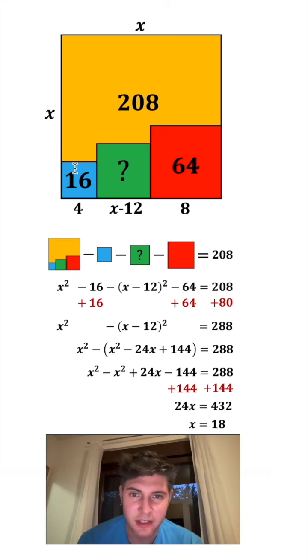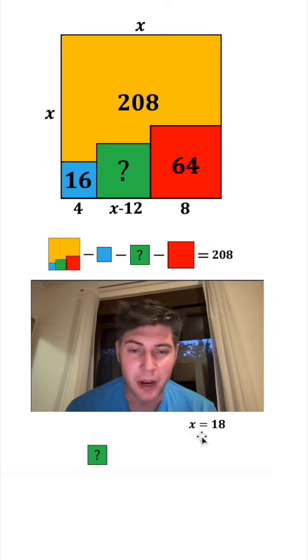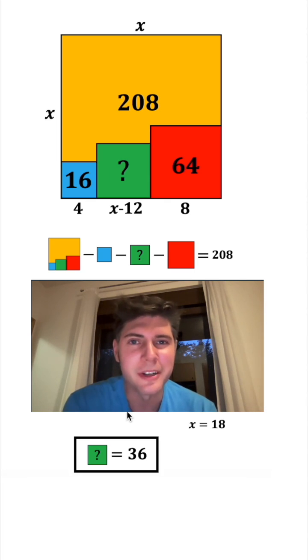We now know that these x's up here are equal to 18. So now to find the area of the green box, we knew that was equal to x minus 12 squared, but we can plug in 18 for the x. 18 minus 12 is 6. 6 squared is 36. And that is the answer to our question. How exciting.